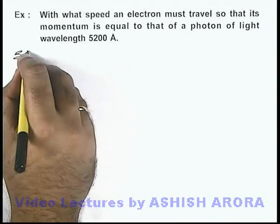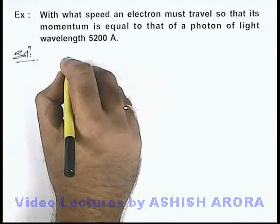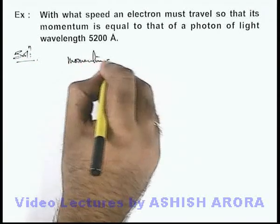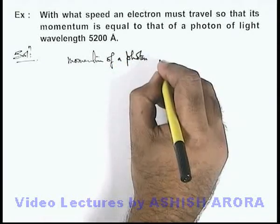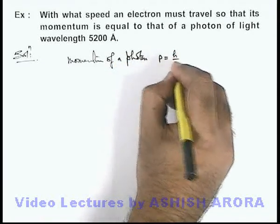Now in this situation we can say that momentum of a photon is given as p equals h by lambda.